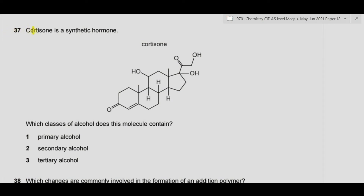Question 37. Cortisone is a synthetic hormone — this is the structure of cortisone. Which classes of alcohol does this molecule contain? We have primary, secondary, and tertiary alcohol. If the carbon bonded with the OH is bonded to no other carbon atom or only one other carbon atom, it is primary alcohol. If bonded directly to two other carbon atoms it is secondary, and if bonded to three other carbon atoms directly it is tertiary alcohol.